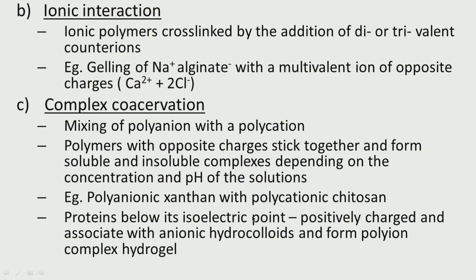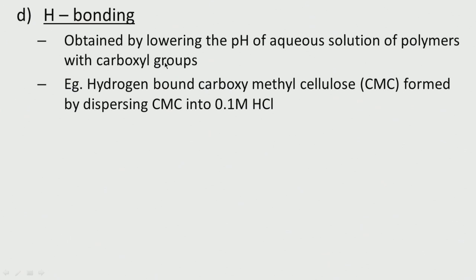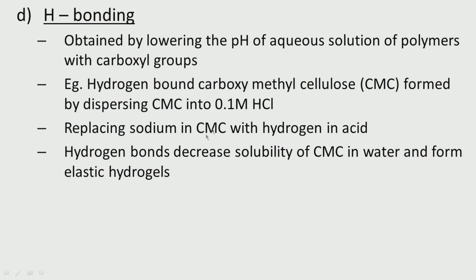Proteins below their isoelectric point are positively charged and can associate with anionic hydrocolloids to form poly-ion complex hydrogels. Hydrogen bonding hydrogels can be obtained by lowering the pH of aqueous solutions of polymers with carboxyl groups. For example, carboxymethylcellulose (CMC) formed by dispersing CMC in HCl — the sodium in CMC is replaced by hydrogen, enabling hydrogen bond formation. Hydrogen bonds decrease the solubility of CMC in water so they form elastic hydrogels.